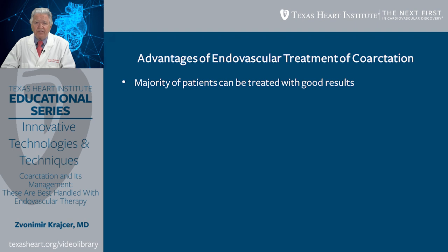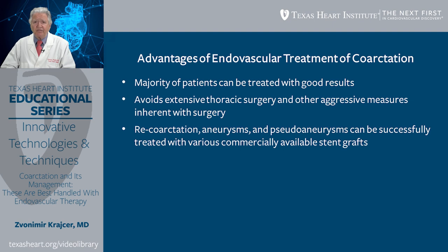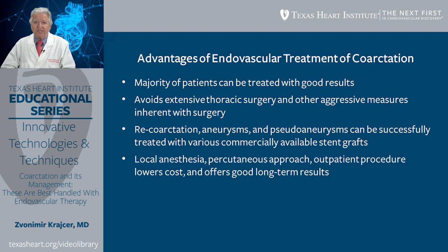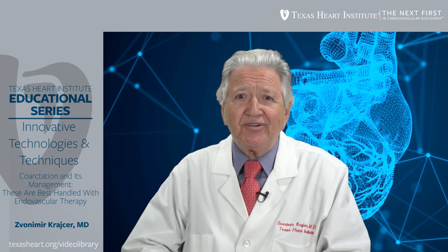On the basis of our experience and that of others, we see significant advantages of endovascular treatment of coarctation. The majority of patients can be treated with good immediate and long-term results, avoiding extensive thoracic surgery. Re-coarctation, aneurysms, and pseudoaneurysms can be successfully treated with various commercially available stent grafts. Local anesthesia, percutaneous approach, and outpatient procedures lower costs and offer good long-term results. Balloon-expandable stents or stent grafts are preferable to plain old balloon angioplasty. Redo intervention is also possible at low risk with good results whenever necessary. Thank you very much for your attention.